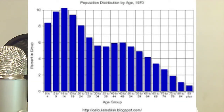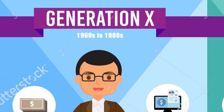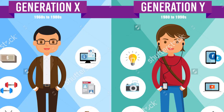Baby bust is a period in the US during the 1960s and 1970s where fertility rates dropped as many female baby boomers sought higher education and jobs. Generation X is people born in the US between 1965 and 1980. They have the burden of supporting the baby boom cohort as they head into retirement. Generation Y is people born between 1980 and 2001, also referred to as echo boomers or millennials.